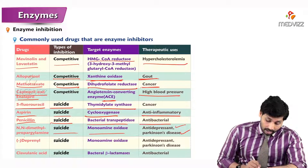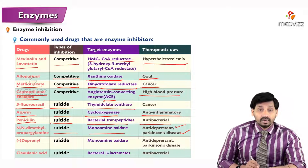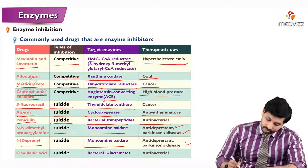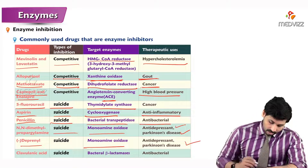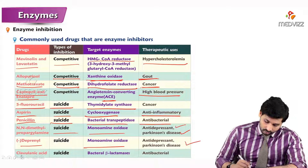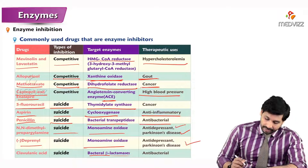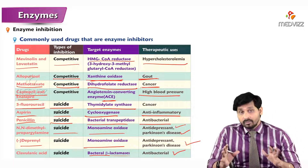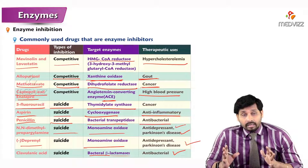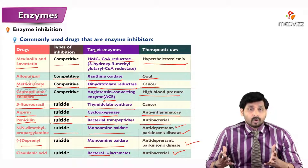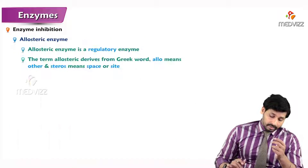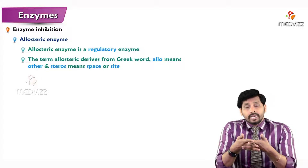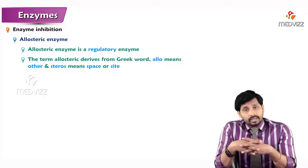Deprenyl and dimethylpropargylamine are suicide inhibitors of monoamine oxidase used as antidepressants and in Parkinson's disease treatment. Clavulanic acid is also a suicide inhibitor of bacterial beta-lactamases, used as an antibacterial. These are the overall therapeutic and treatment uses of competitive and suicide inhibitors in enzyme inhibition.